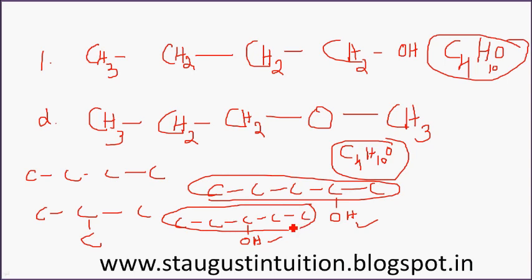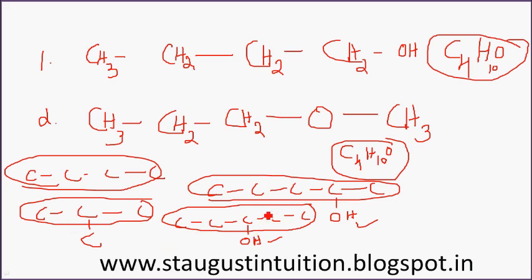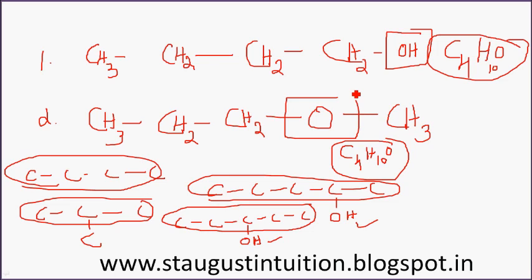If you don't know the word root, you will find it in other videos. If the word root is the same, then it is position isomerism. The first group is the functional group: this group is O — hydroxyl. This group means ether. These 2 groups are different — this is functional group isomerism. The word root is the same for chain isomers, and position isomers have the same group.